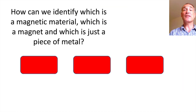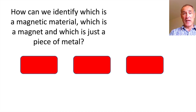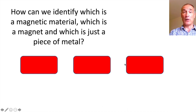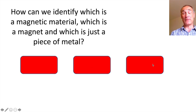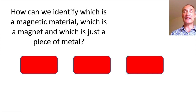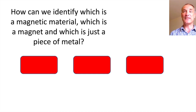So this is a common question both at GCSE and at Key Stage 3. Here I've got three different objects — one is a magnet, one is a magnetic material, and one is a piece of non-magnetic metal. How can you, with a magnet, discover which is which? Have a think about it, then I'll show you a video so you can see the test yourself.